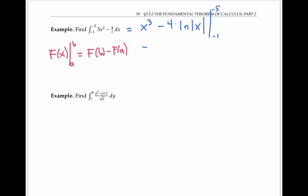So now we just plug in -5 for x, and then we subtract what we get when we plug in -1 for x. In this example, you can see why it's important to write the antiderivative of 1/x as ln|x|, not just ln x.